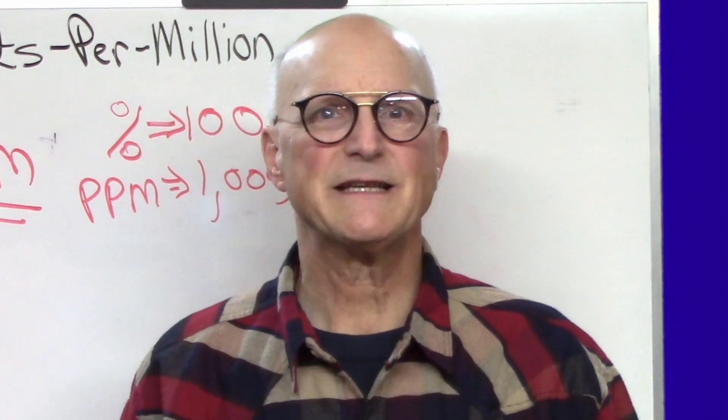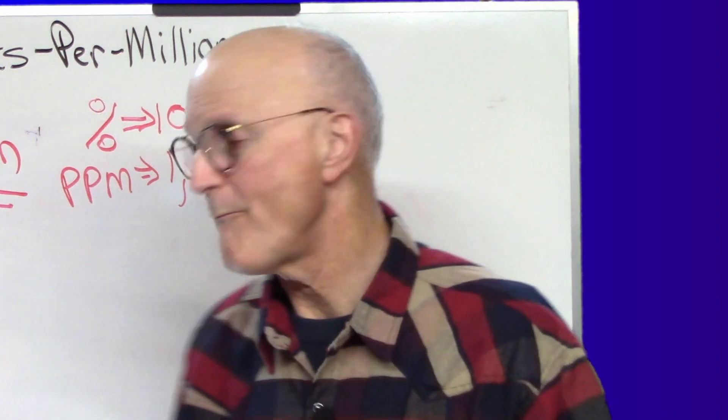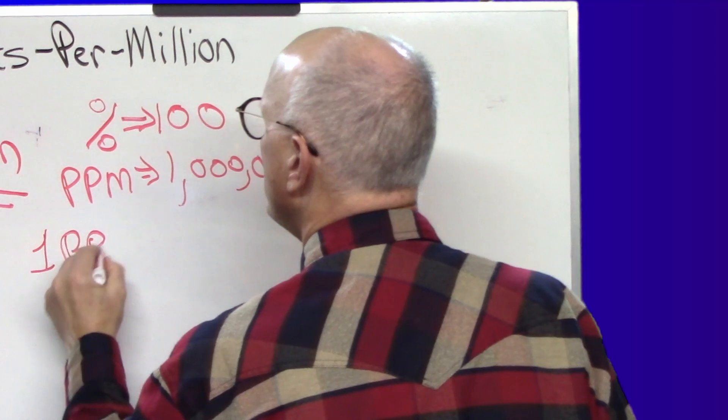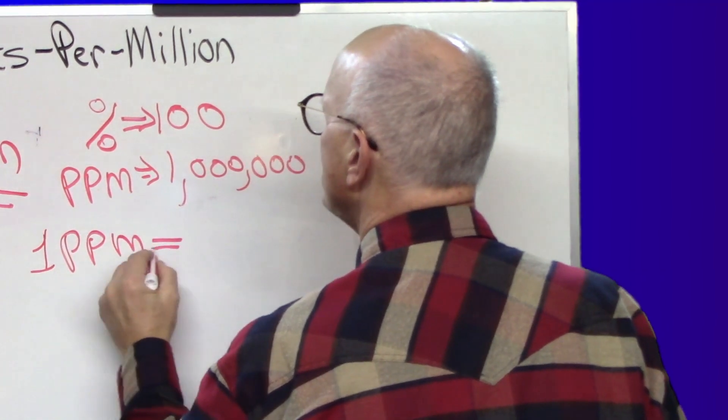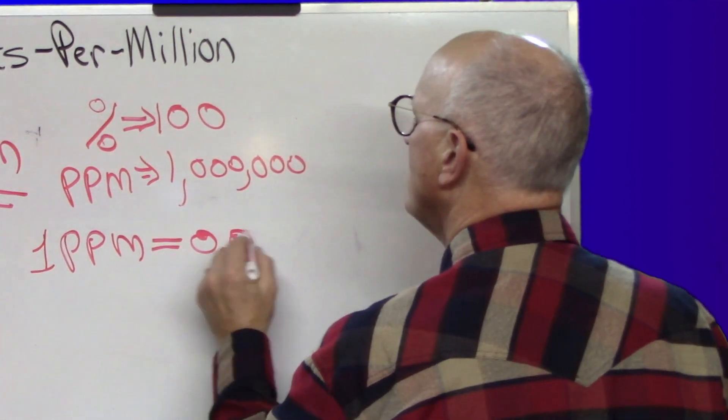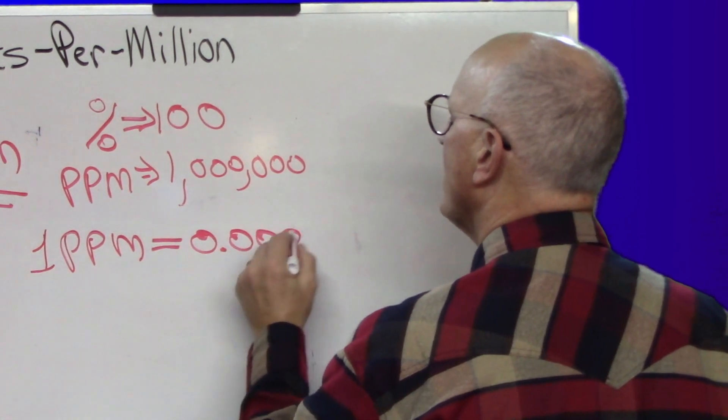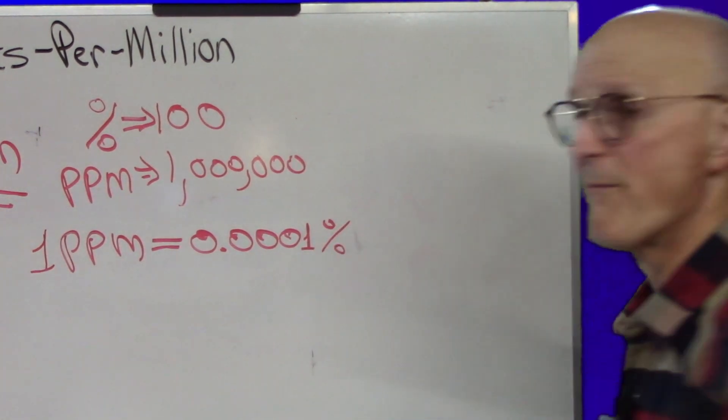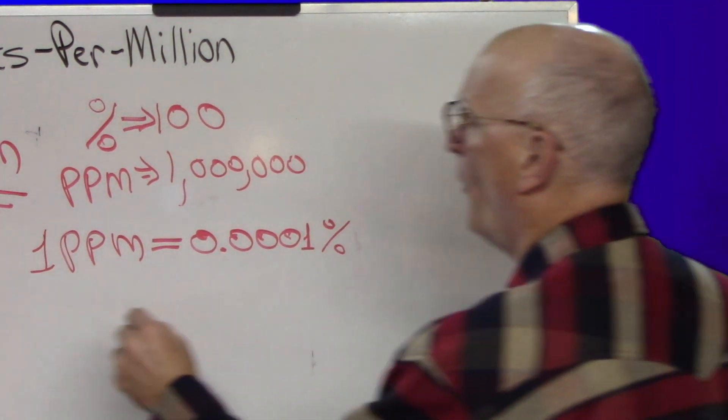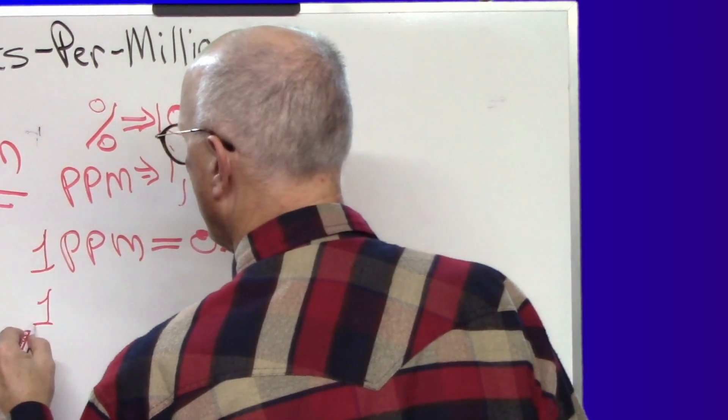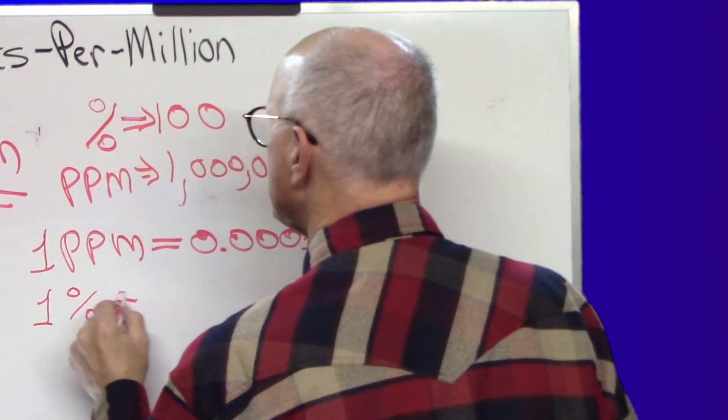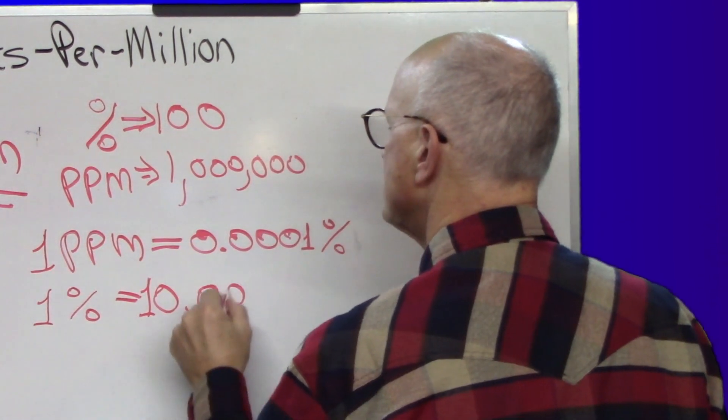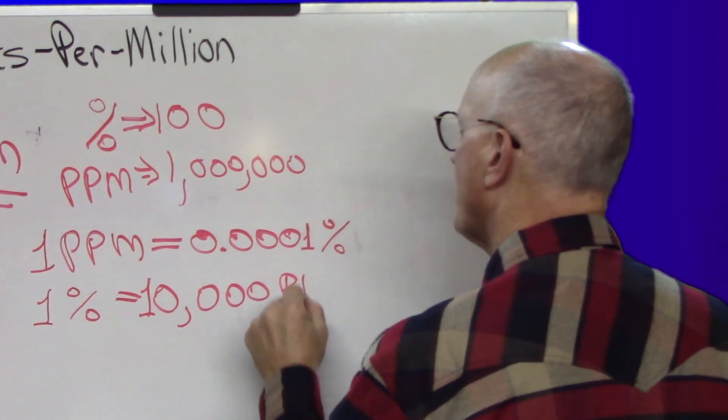Now let's relate this directly to percentage. One part per million is equal to 0.0001%. And 1% is the same thing as 10,000 parts per million.